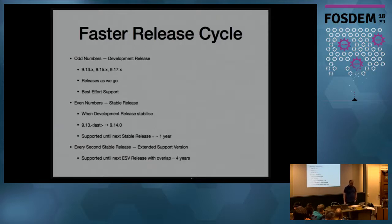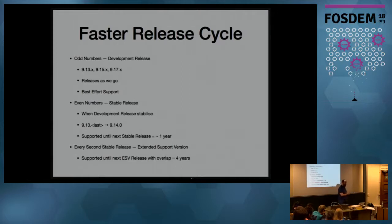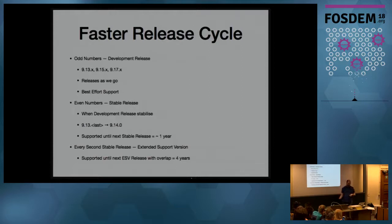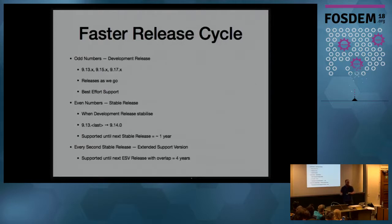Regarding the faster release cycle: odd numbers will be the development releases, released as we go and as needed. So 9.13, 9.15, 9.17 will be development releases — similar to what NGINX does. Support for those releases will be best effort. If you report a bug, we'll fix it in Git and release it in the next cycle, which might be monthly or quarterly depending on the severity of bugs in those releases.